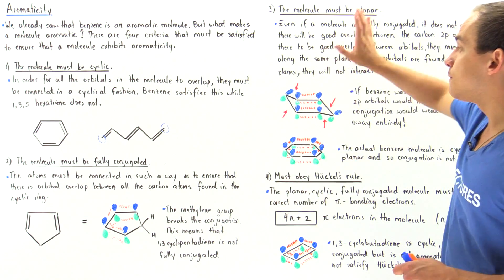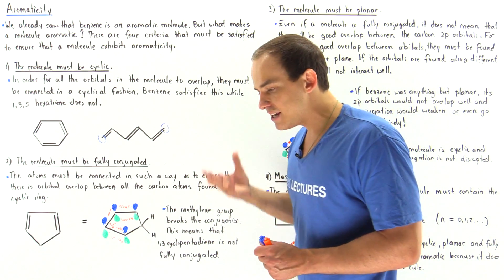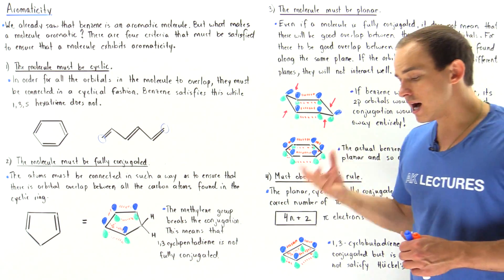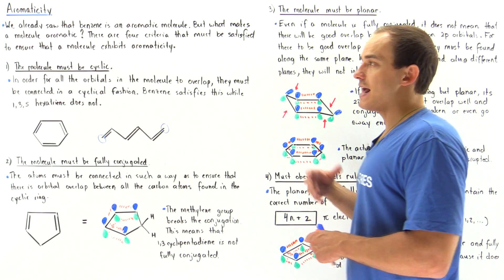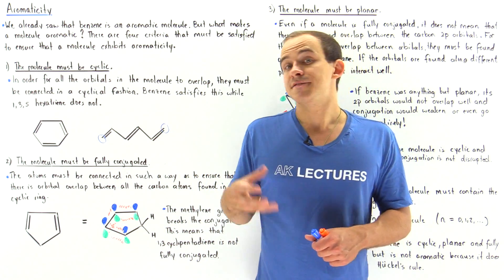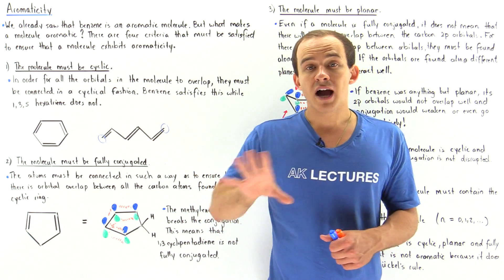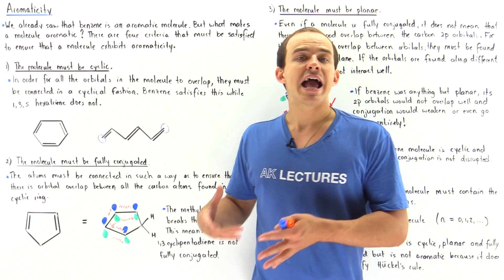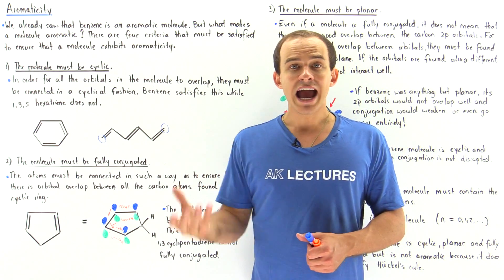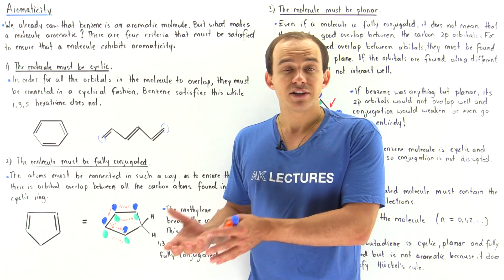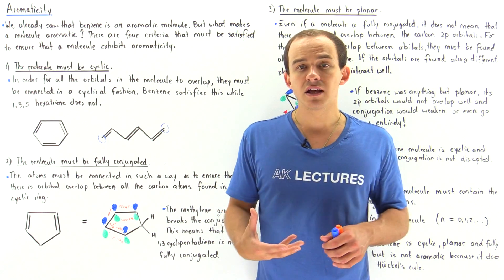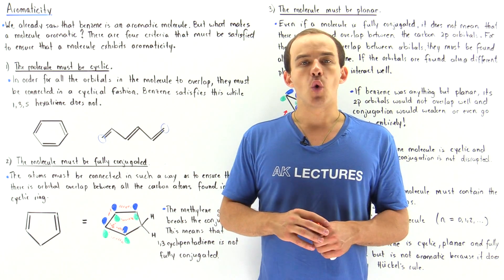These are the four criteria that must be satisfied for any molecule to exhibit aromaticity and be called an aromatic compound. Our prime example is benzene. Because benzene is aromatic, it is very stable and relatively unreactive — it will not want to break that aromaticity. For example, if we allow benzene to undergo hydrogenation, it would lose aromaticity and become relatively unstable, which is exactly why benzene is unreactive under normal conditions.